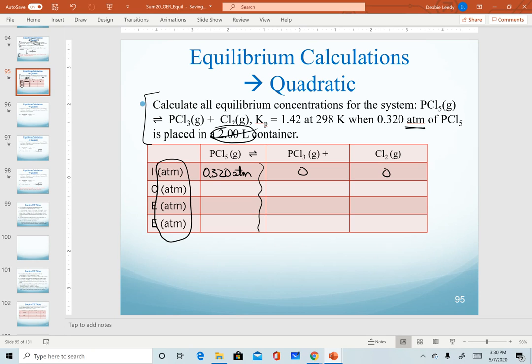Drawing that squiggly line under our arrow, we know that our products are going to have to increase because they start at zero and our reactant decreases. Everything is a coefficient of 1, which means on our change line, everything is just a coefficient of 1 for our x. Setting up our equilibrium line, we get 0.320 minus x for PCl5, x for PCl3, and x for Cl2.